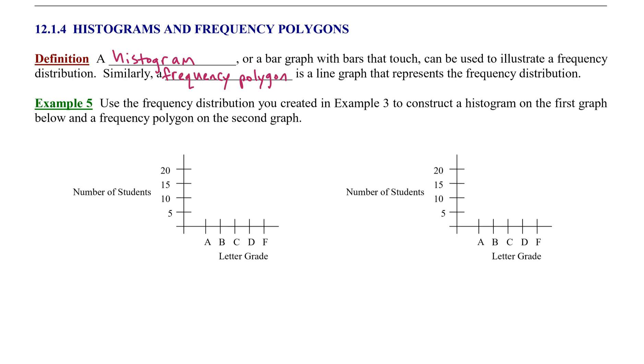To understand these two, we're going to use the frequency distribution that we created in Example 3 to make both a histogram—that is, a bar graph with bars that touch—and a frequency polygon on the second graph.